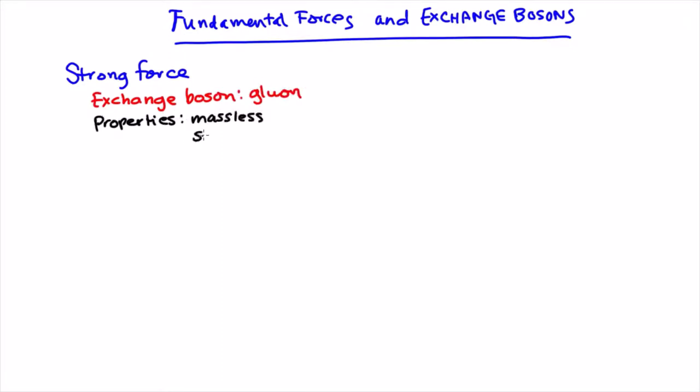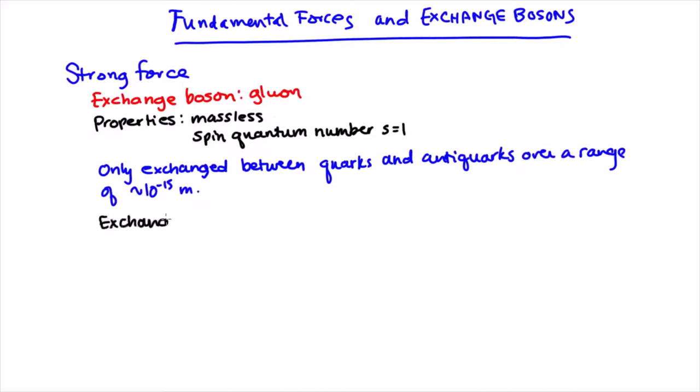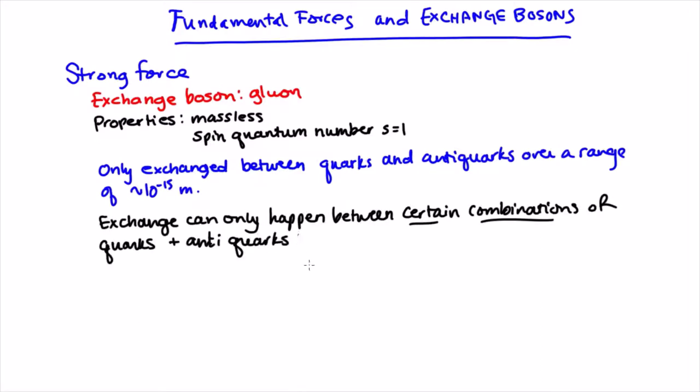The exchange bosons for the strong force are called gluons. Like photons, they're massless, and they're only exchanged between quarks and antiquarks. This time though, the exchange process is a bit more complicated, because there's a third property known as color that determines whether certain quarks can be drawn together via the strong force.